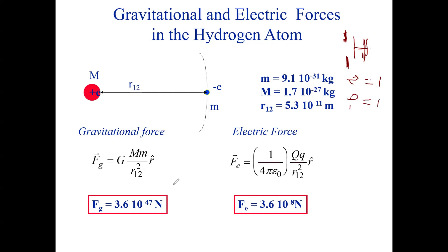We have the mass of the electron mₑ, the molar mass, and the distance of their separation. For the gravitational force, recall the formula involves the mass of object one, the mass of object two, and the distance of separation r squared.